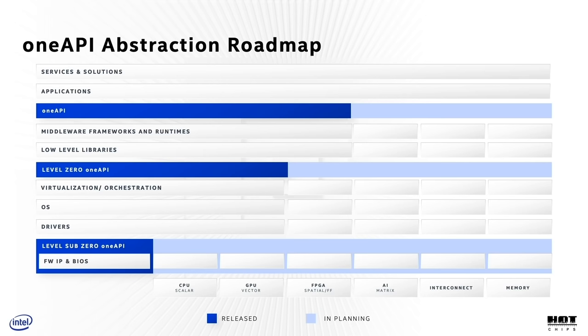We launched an initiative called OneAPI that is open to all and have been making progress on these layers of abstractions. Currently we have good support for CPU and GPU and are steadily expanding. The OneAPI Beta is available on Intel Dev Cloud and is accessible to all developers.